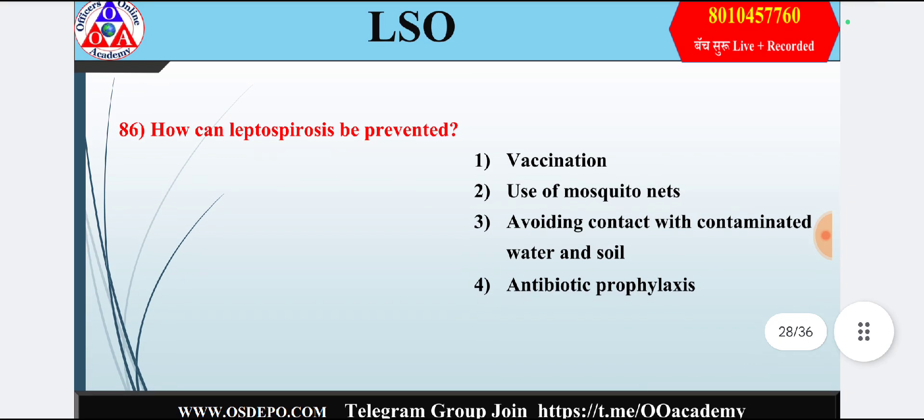Question 26: How can leptospirosis be prevented? Option 1: vaccination; option 2: use of mosquito nets; option 3: avoiding contact with contaminated water and soil; option 4: antibiotic prophylaxis. Answer is option 3 — avoiding contact with contaminated water and soil.